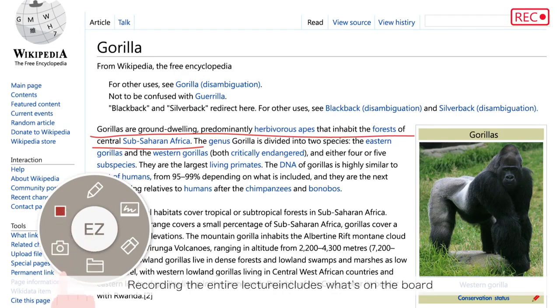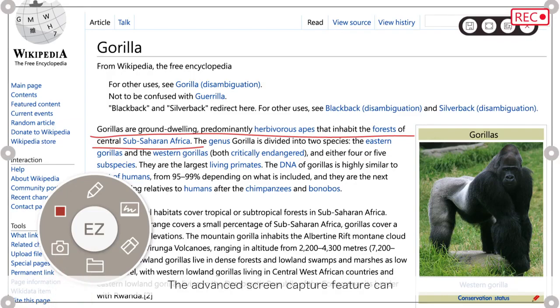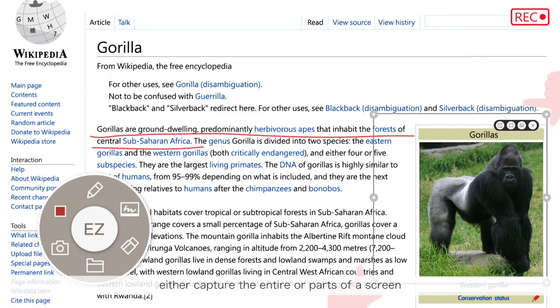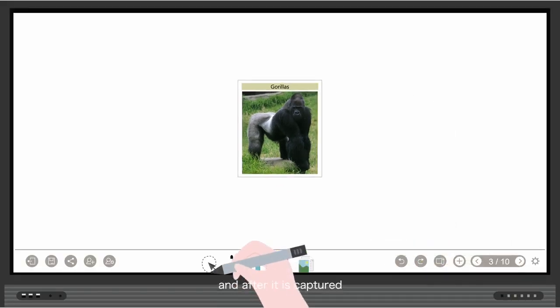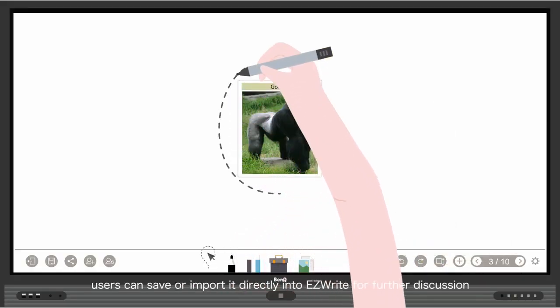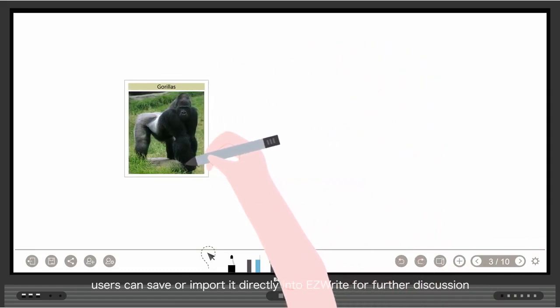Recording the entire lecture includes what's on the board, what is being discussed in class, and any audio coming out of the speakers. The Advanced Screen Capture feature can either capture the entire or parts of a screen, and after it is captured, users can save or import it directly into EasyWrite for further discussion.